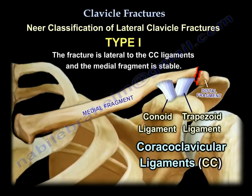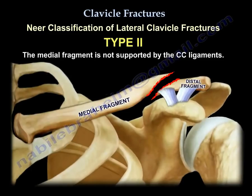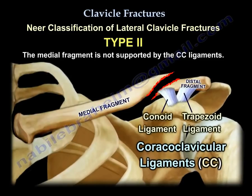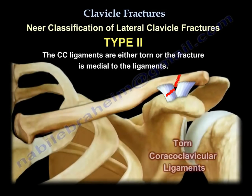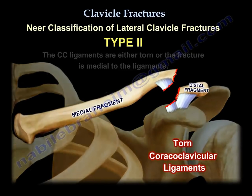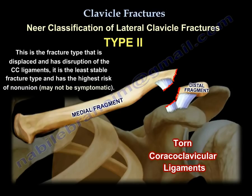In Type 2, the medial fragment is not supported by ligaments — either the ligaments are torn or the fracture goes medial to the ligaments. The lateral fragment may have the ligaments completely, partially, or not at all. It is the medial fragment that is important: because it lacks ligamentous support, it displaces superiorly.